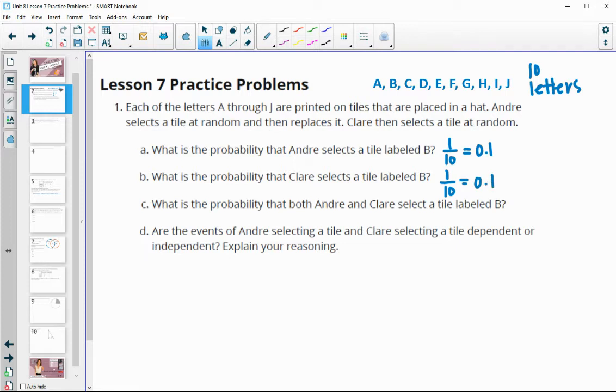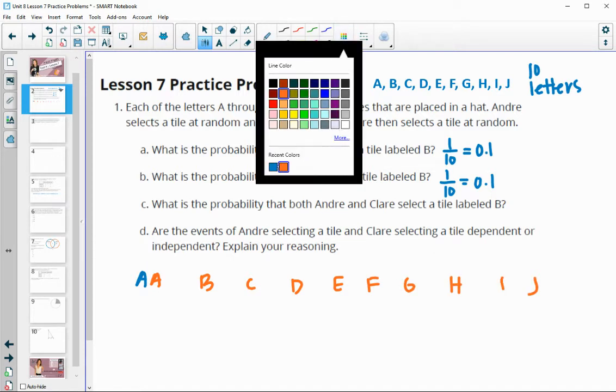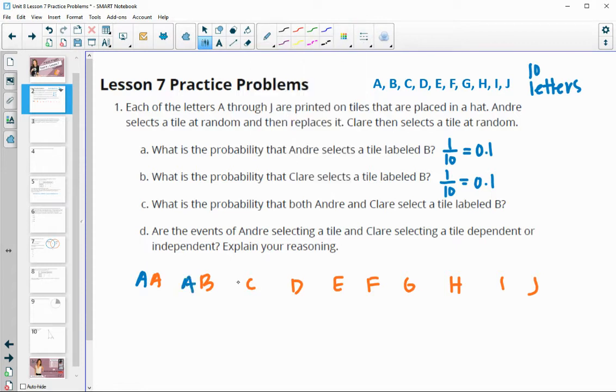What is the probability that they both select a B? So that Andre selects a B and then Claire also selects a B. If you think about the sample space, remember, so the first selection would be A, then Claire could choose the letters A, B, C, D. She could choose any of these, right? So if we're thinking about writing out the whole sample space for each letter, they could each choose the other one as well.